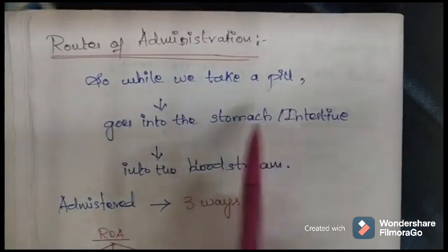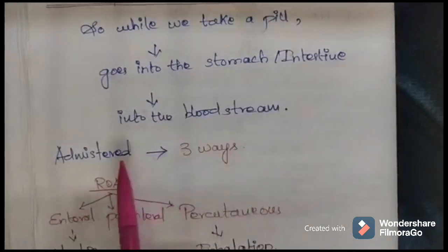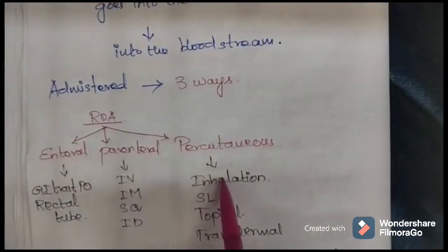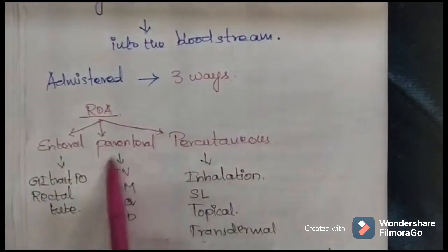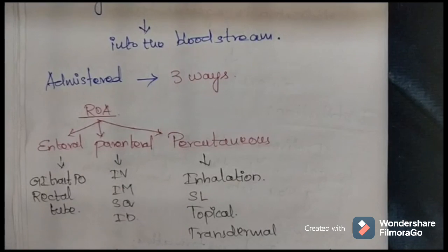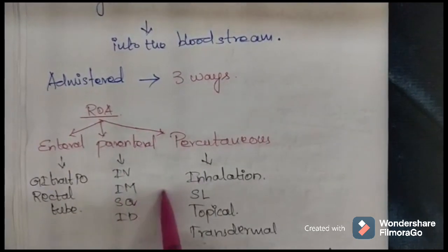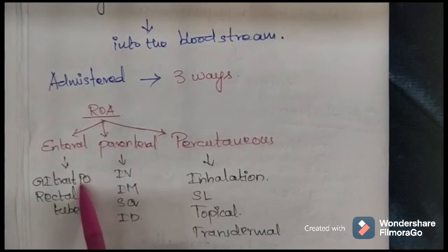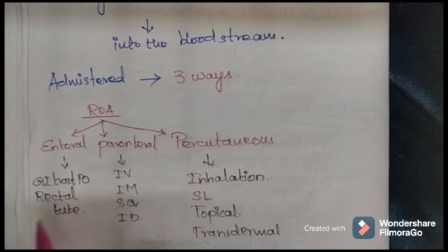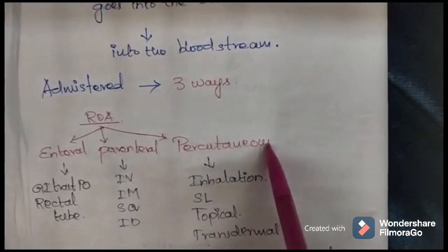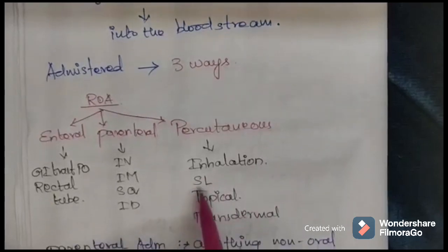When we take a pill, it goes into the stomach or intestine and then reaches the bloodstream. A drug can be administered via three routes of administration: enteral, parenteral, and percutaneous. Parenteral includes drugs given non-orally, injected directly into the body bypassing the skin and mucous membrane. Common parenteral routes are IV (intravenous), intramuscular, subcutaneous, and intradermal. In enteral, the drug is given through the GI tract — oral (PO, meaning 'by mouth,' a Latin term) and rectal.